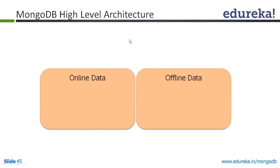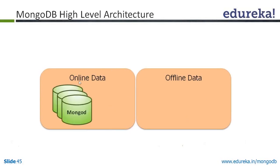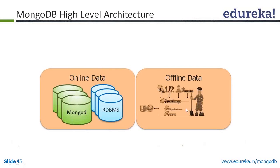Let's understand quickly about high-level architecture. You may have online data or offline data. Online data can be managed with MongoDB or with RDV units. For offline data, you go with Hadoop or you use Enterprise Data Warehouse, OLAP, DSS, or DW.